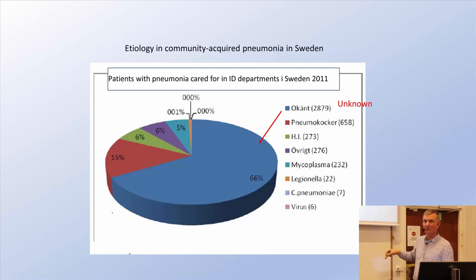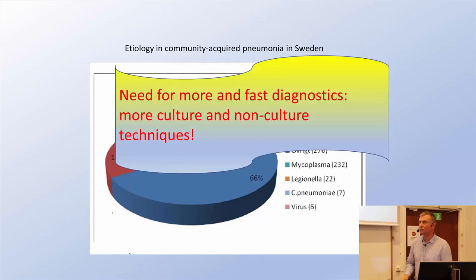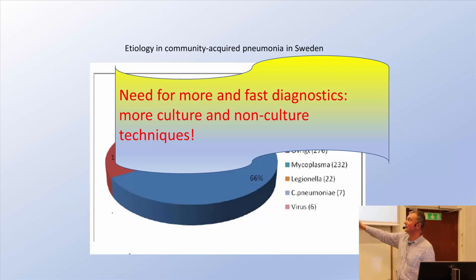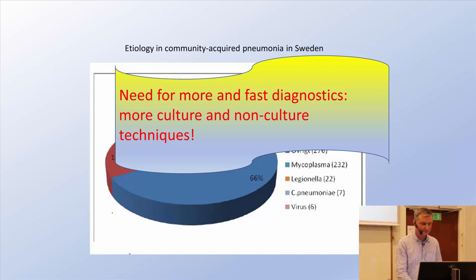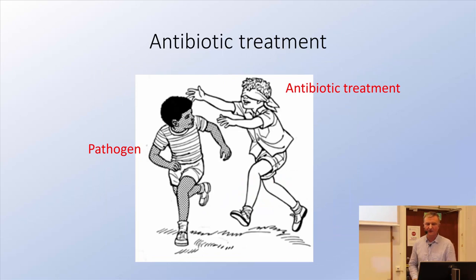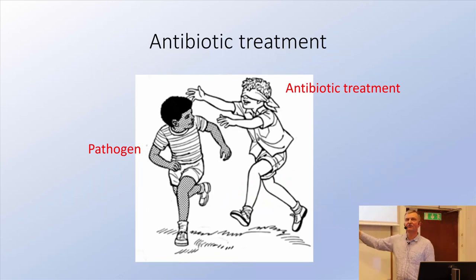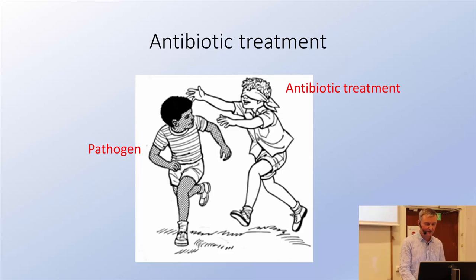That's the real world of infectious diseases. We need more and faster diagnostics — more culture and non-culture techniques. You can put it like this: antibiotic treatment is trying to catch the unknown.